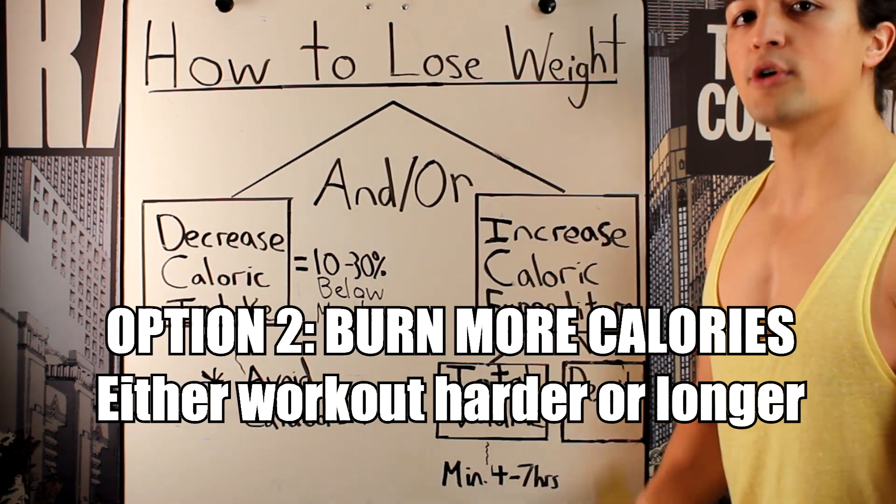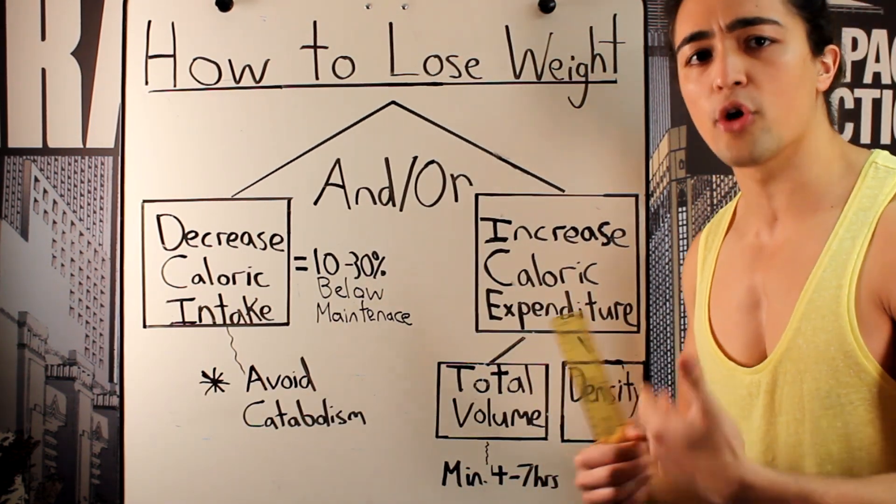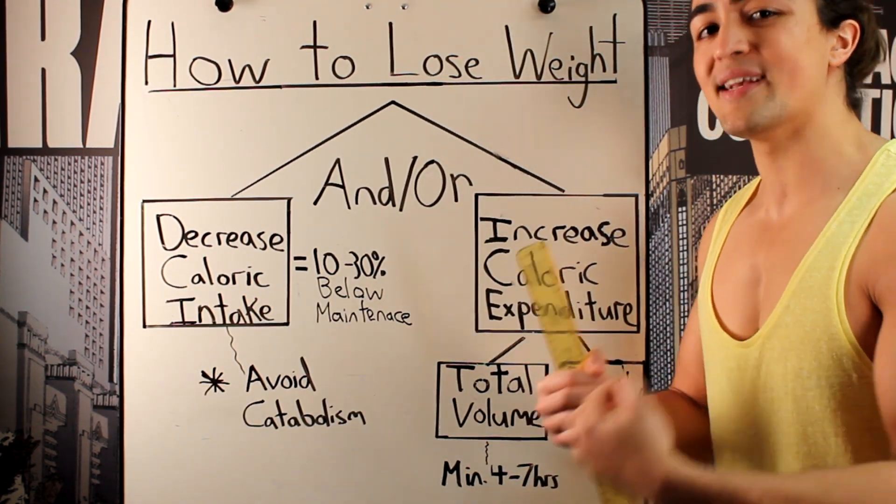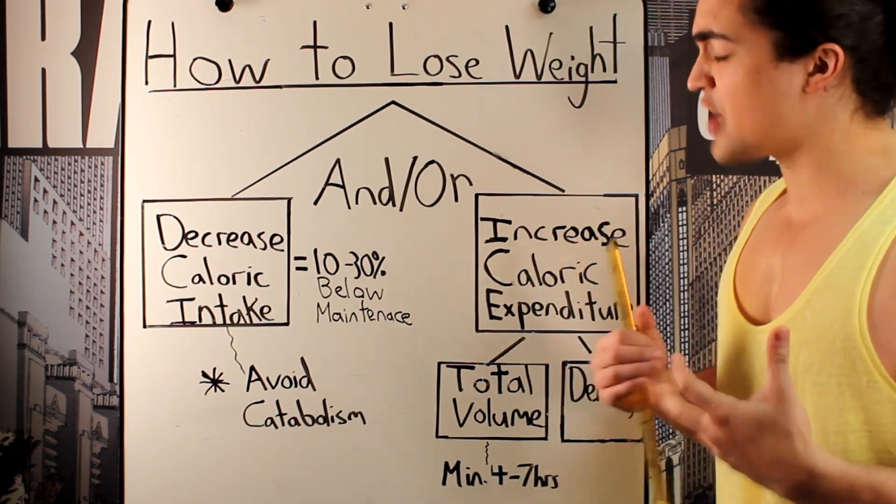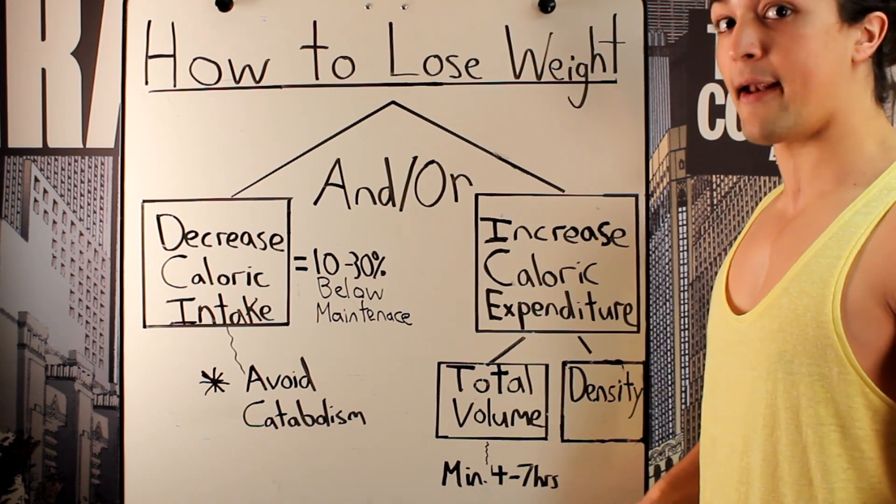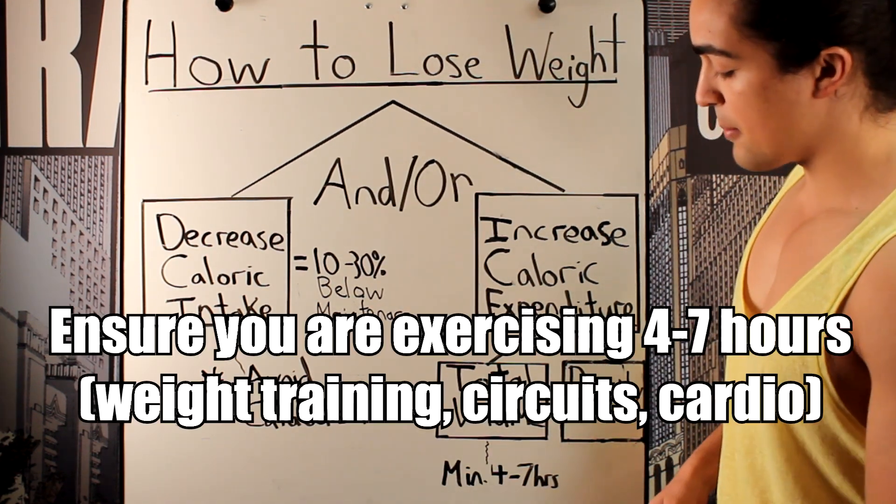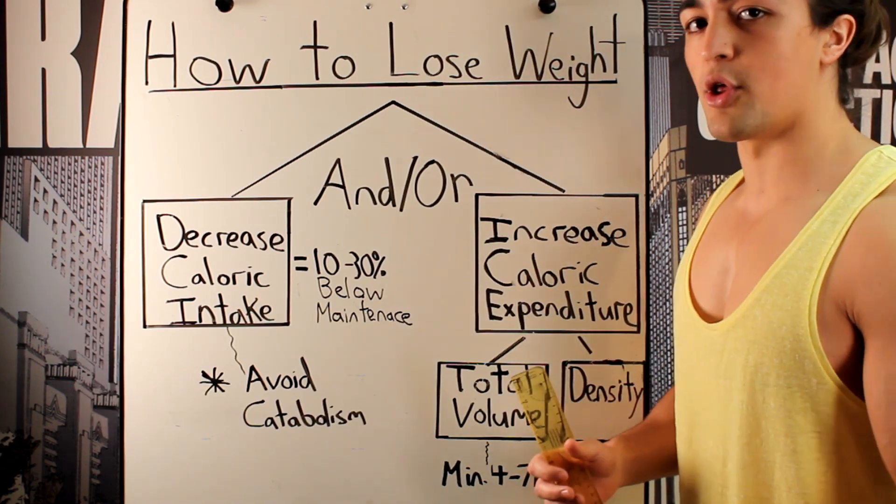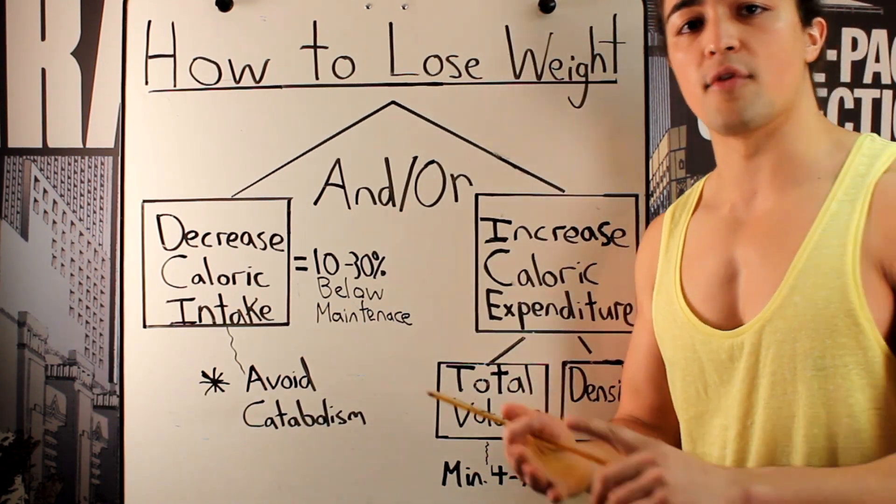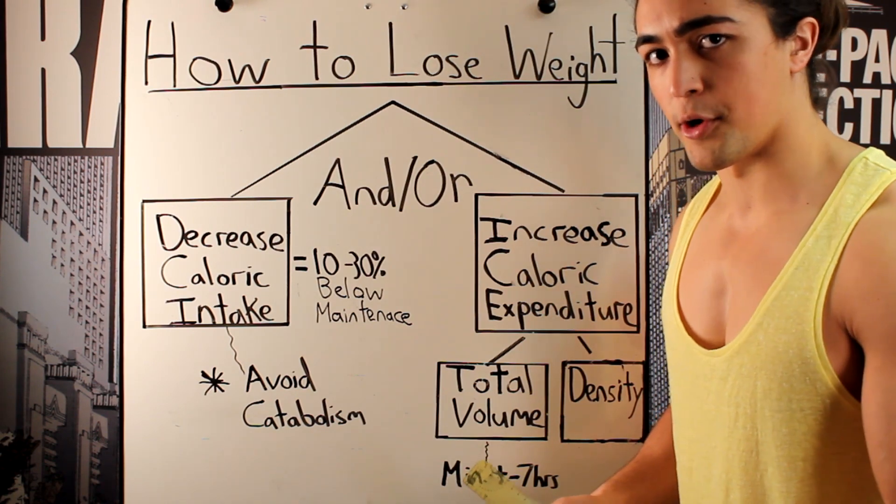One is total volume, doing more total work. So, you got to time how long you exercise in total, and then increase that over time. How long should you exercise in order to optimally change your body composition and lose fat? Well, usually, I recommend between four to seven hours would be optimal, and you might have to increase that slowly over time. This is a combination of your resistance training, circuits, and cardiovascular work.